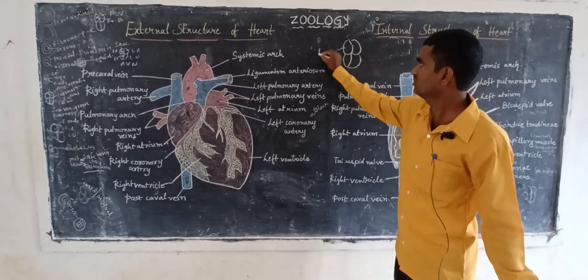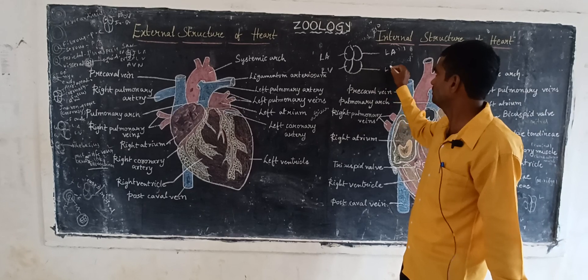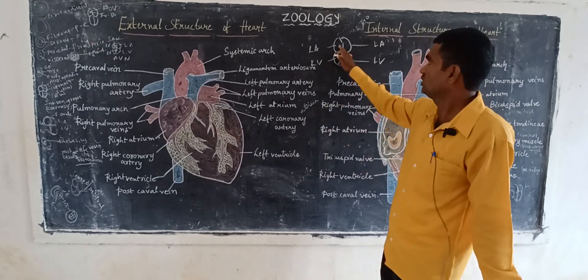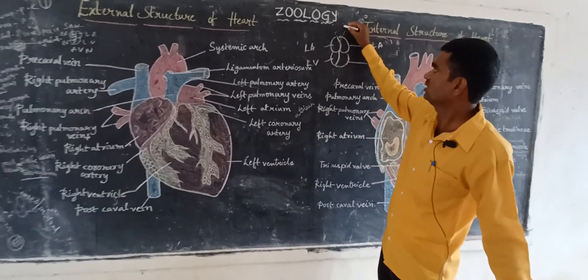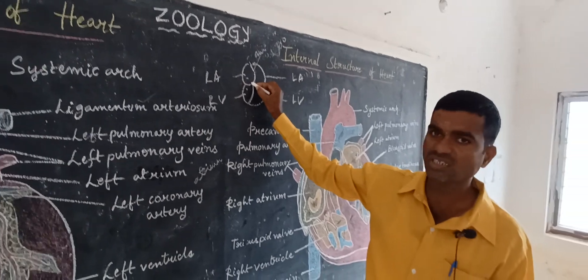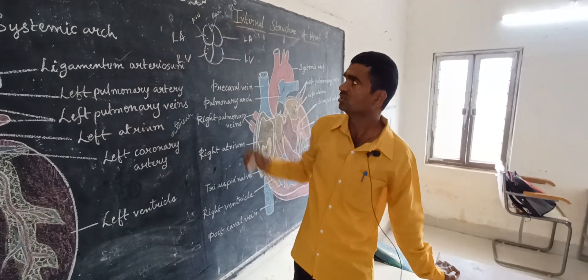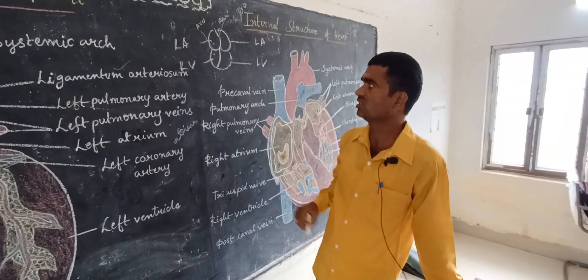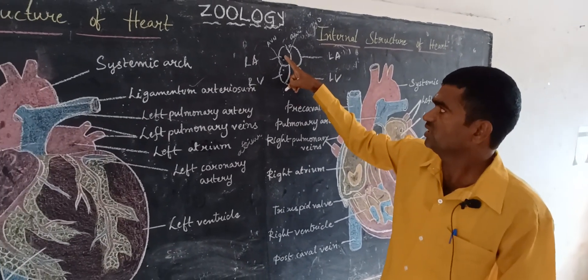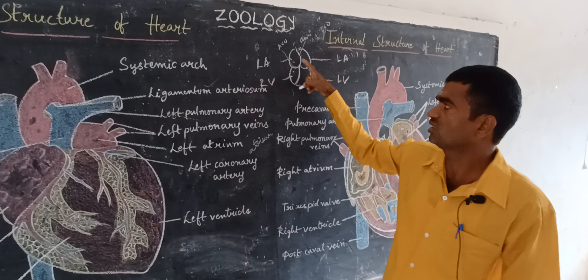The heart has four chambers: right atrium, right ventricle, left atrium, and left ventricle. The two atria are divided by the auricular appendix. The junction between one atrium and one ventricle is called the atrioventricular aperture or atrioventricular node, also known as the coronary sulcus.